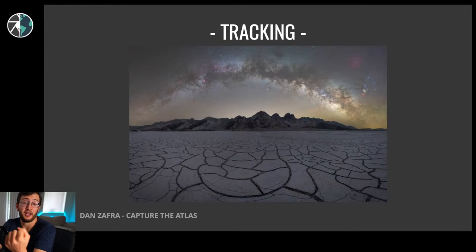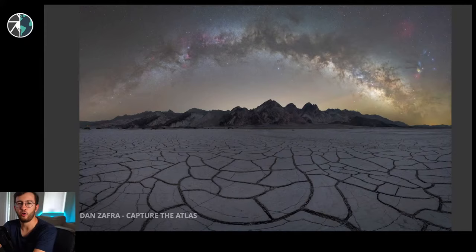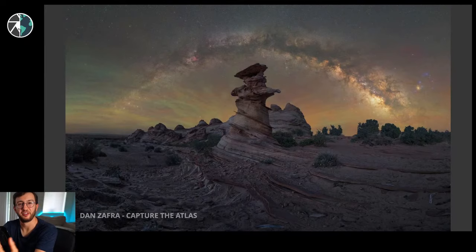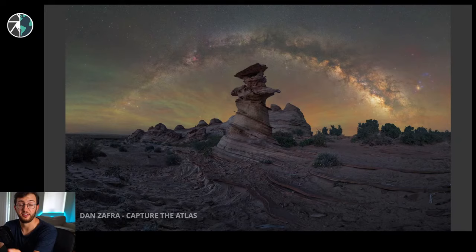When I started tracking, the first thing I noticed is that all my images had much more details, more image quality, and better colors - it was just a huge difference. One of the main differences was the colors. In this image, for example, you can see the airglow - all these green and beautiful colors in the sky. All that wasn't possible before tracking.